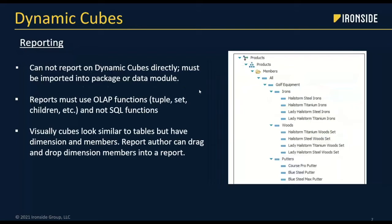From a reporting standpoint, if you're used to cubes, Dynamic Cubes should look familiar. You work with dimensions — not tables and columns, but true dimensions. You can actually see the values in those dimension columns. For example, there's a products dimension where you can see golf, golf equipment, irons, and individual products in the hierarchy tree. One caveat: because it is a cube, you must use OLAP functions — technically called MDX, not SQL functions. There is a learning curve around how to use these unique functions.